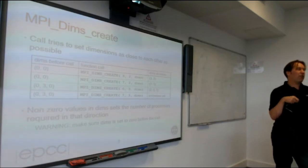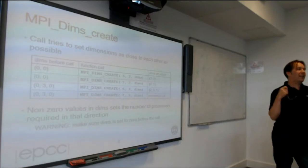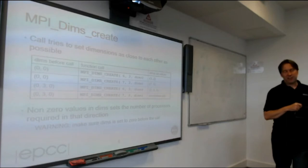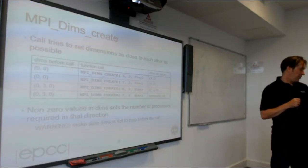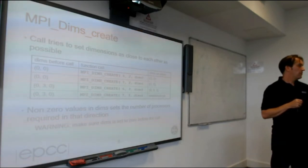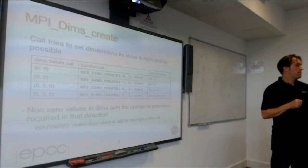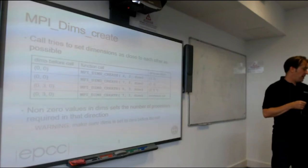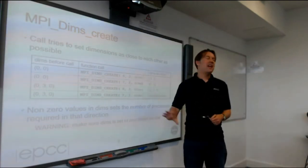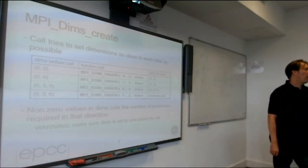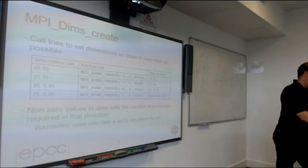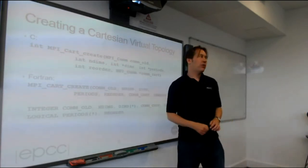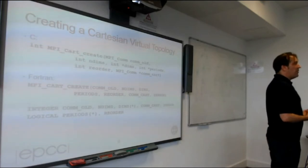MPI_Dims_create is nothing more than a helper function, but it can be quite useful. When you write a program using these calls, it's very obvious to anyone reading the code what you're doing — rather than some strange self-written lookup table. Regarding hardware awareness: MPI_Dims_create doesn't know about the hardware. The reordering optimisation happens at MPI_Cart_create time when you specify reorder=true, which in principle allows MPI to rearrange processes to better match the network topology. In practice, when I tested it a few years ago, only one MPI distribution attempted this and it did a poor job.